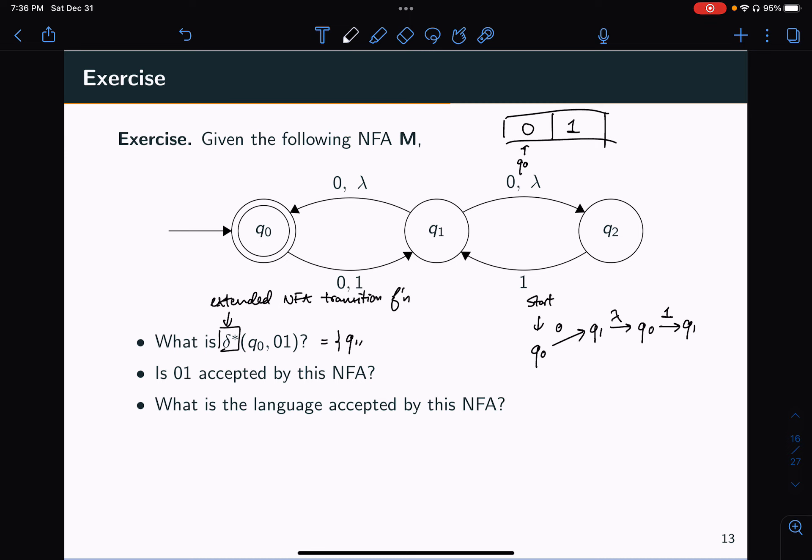Well, from Q1, the other thing I could do, so instead of going to Q0, what I could do is from Q0 reading a zero, I have to go to Q1. Then I could use this lambda instead to go to Q2. And then I can use this one to go back to Q1. But that doesn't really help me in expanding the set of states I can reach, because again, I reach Q1.